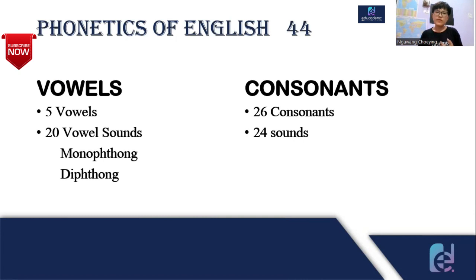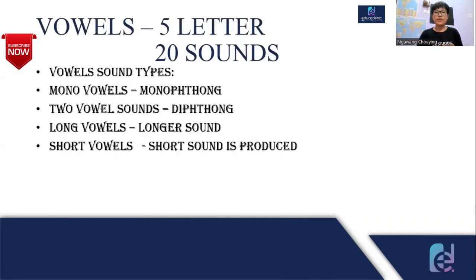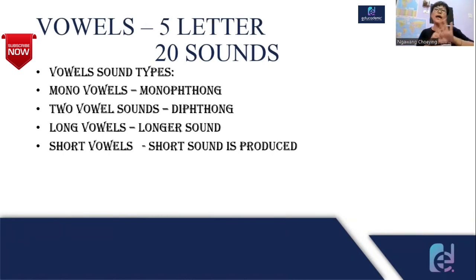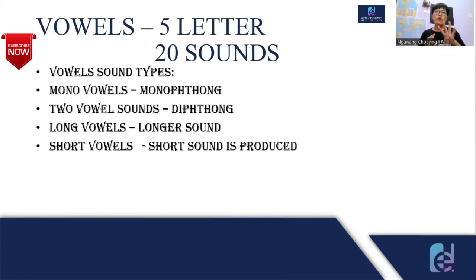Consonants produce 24 sounds, while vowels produce 20 different sounds. Vowels are made up of five letters: A, E, I, O, U. At the same time, vowels produce 20 sounds.